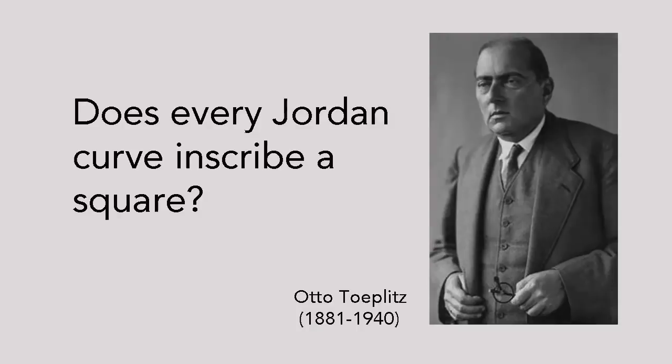The Toeplitz conjecture has been shown to hold for a large class of Jordan curves, namely those that are convex and smooth. The key point about a convex curve is that a straight line drawn between any two points on the curve will never cross over it. Smooth, in the mathematical sense, means that the slope of a line that just touches the curve, a tangent, never jumps abruptly from one point to the next. In plain language, the curve has no corners.